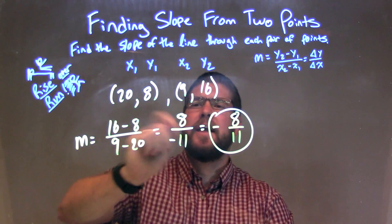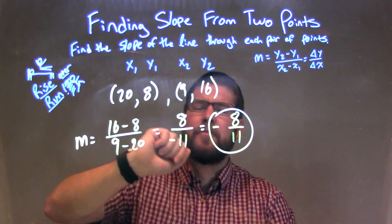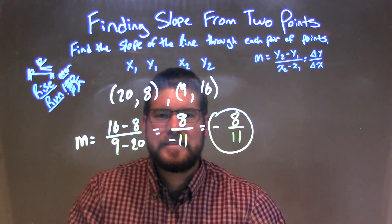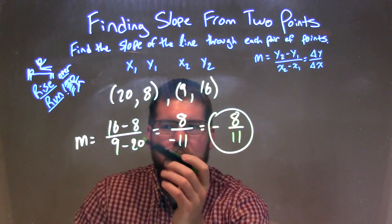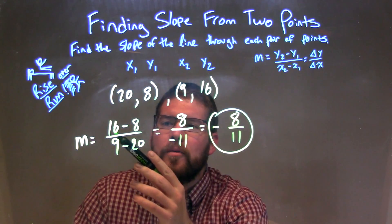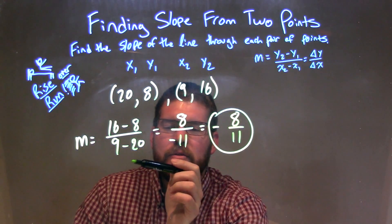So let's recap. We're given 20 and 8 for our first point, and 9, 16 for my second point. So we follow the slope formula, y2 minus y1 over x2 minus x1 right here, and 16 minus 8 over 9 minus 20.